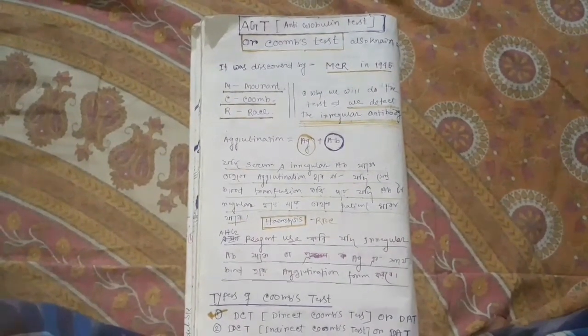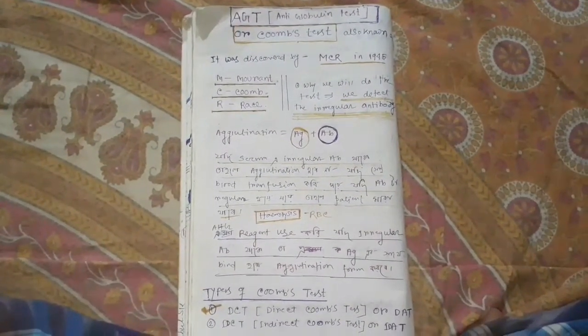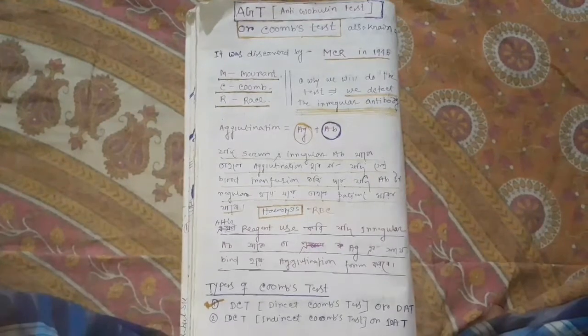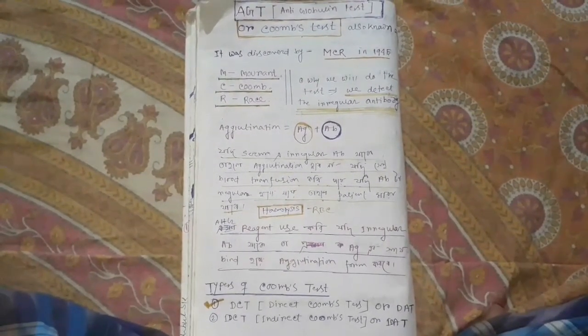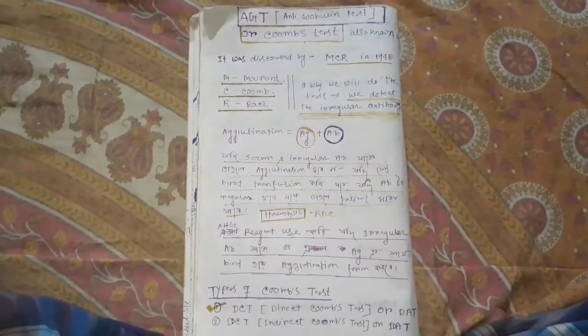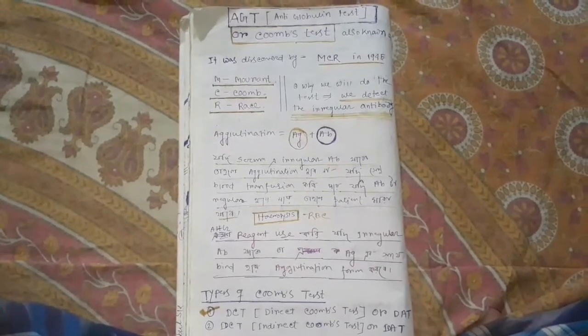It was discovered by three scientists in 1945. The three big names are Mourant, Coombs, and Race. This is why it's called the Coombs test.